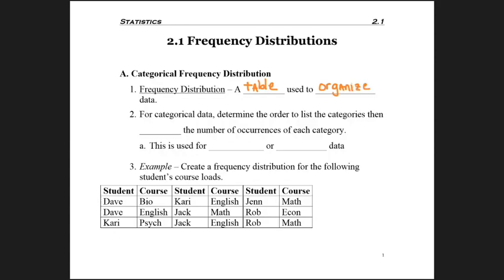Specifically for categorical data, determine the order to list the categories in, like what should be listed first. Should it be alphabetical or any sort of order? Then what we want to do is total the number of occurrences for each category and count that as our frequency. For categorical data, this is really just for nominal and ordinal data.